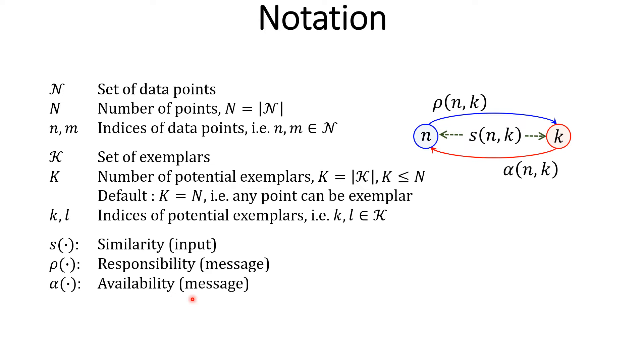Availability alpha_nk is the message sent by potential exemplar k to the data point n.